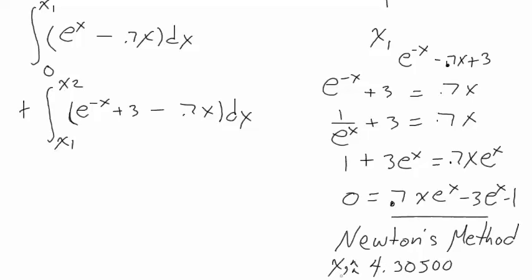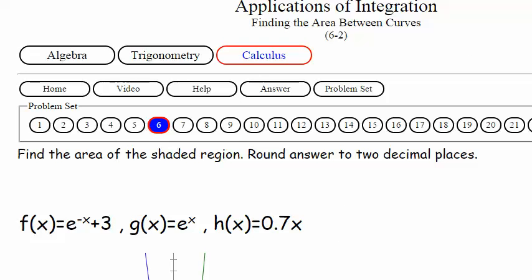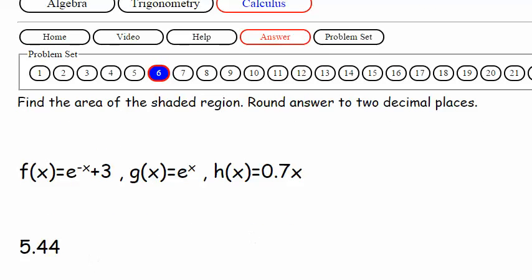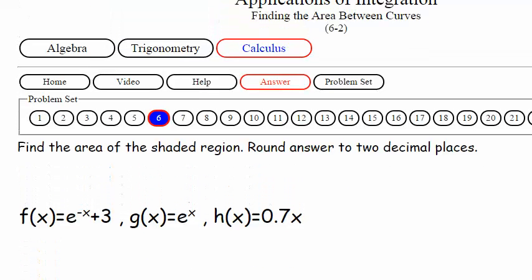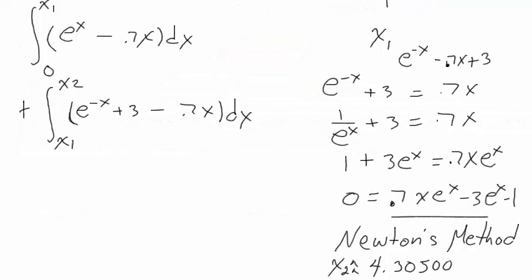So I'm not going to tell you how to get x of one. That was in video 6.1. And then of course you just take the integral of this, take the integral of that. And then remember we had to break it up into two separate ones and then add it to the integral of this. And your answer should be, let's click answer. Five point four four. Five point four four.